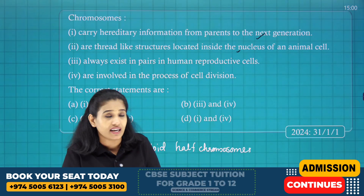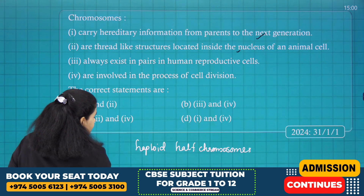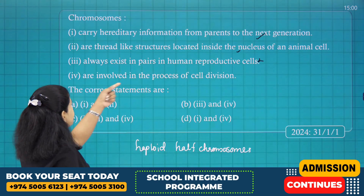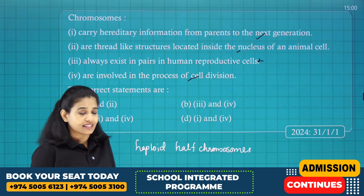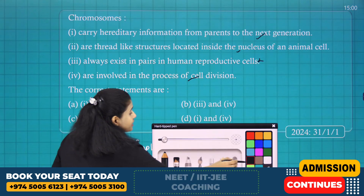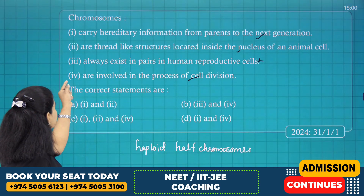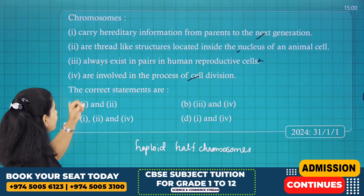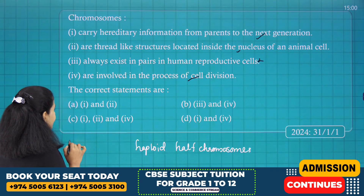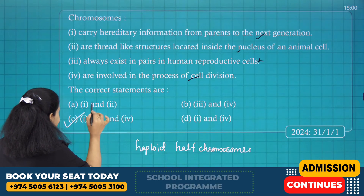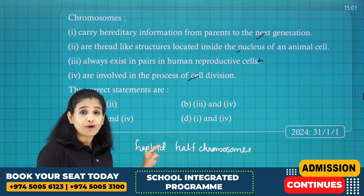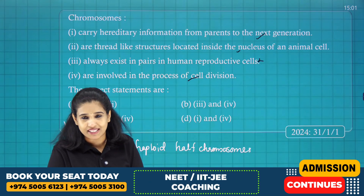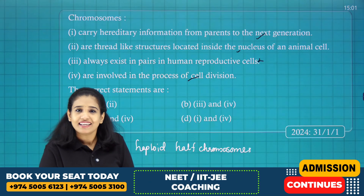So statement 3 is wrong. Statement 4 — chromosomes are involved in the process of cell division — that is also correct. So only option 3 is wrong and options 1, 2, and 4 are correct. Therefore the correct answer is option C.